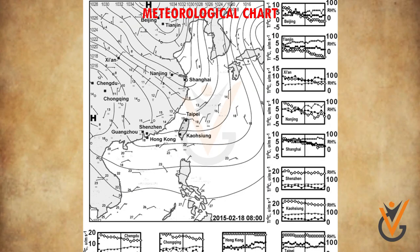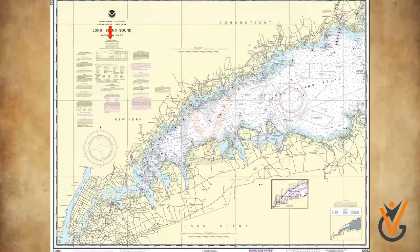A meteorological chart, also called a weather chart, is prepared and transmitted by shore meteorological centers of various countries for their respective sea areas under coverage. These charts include prevailing and predicted weather conditions. The Indian Meteorological Department in India is responsible for preparing and transmitting weather charts covering the Arabian Sea, Bay of Bengal, and part of the Indian Ocean.